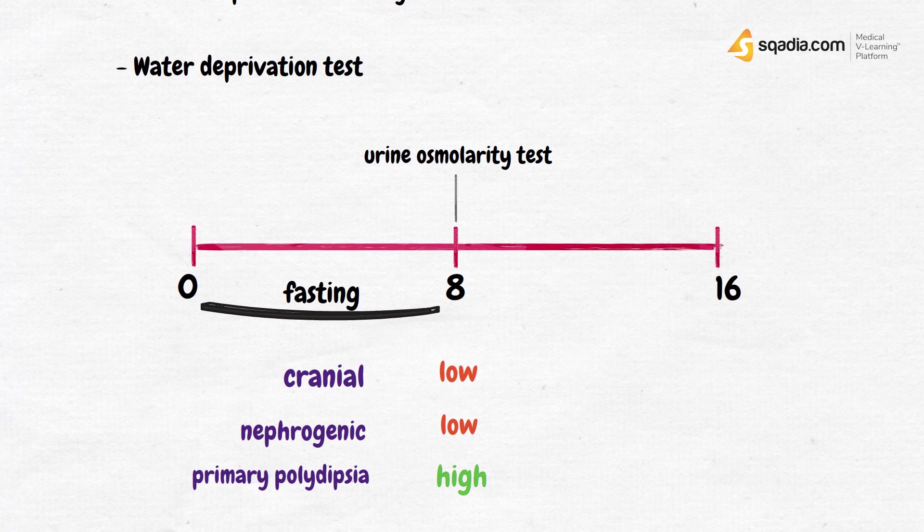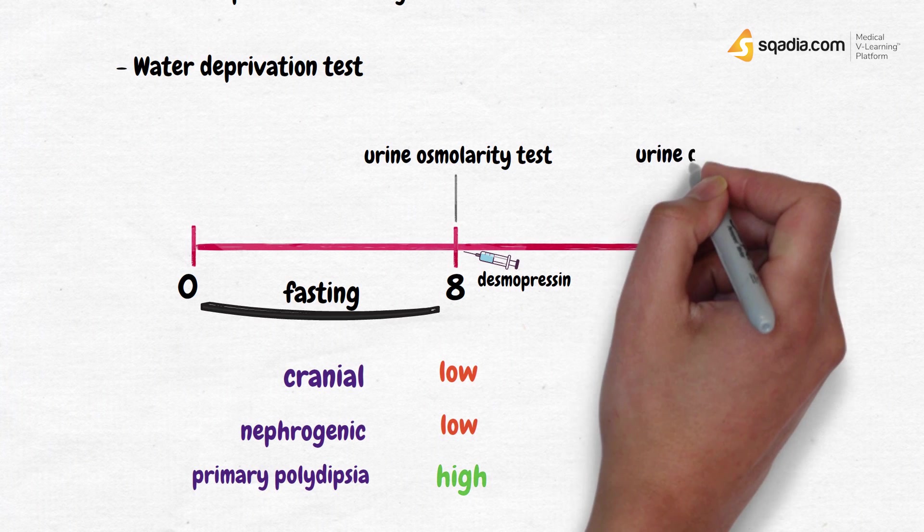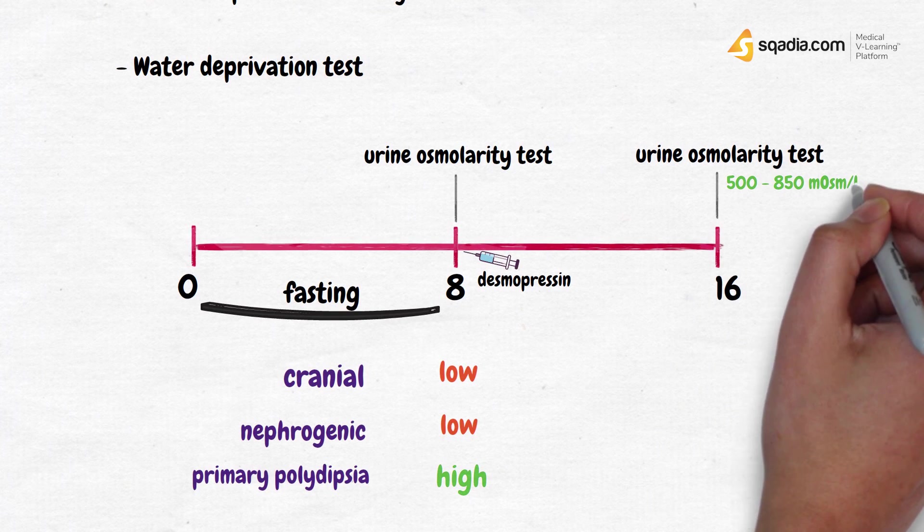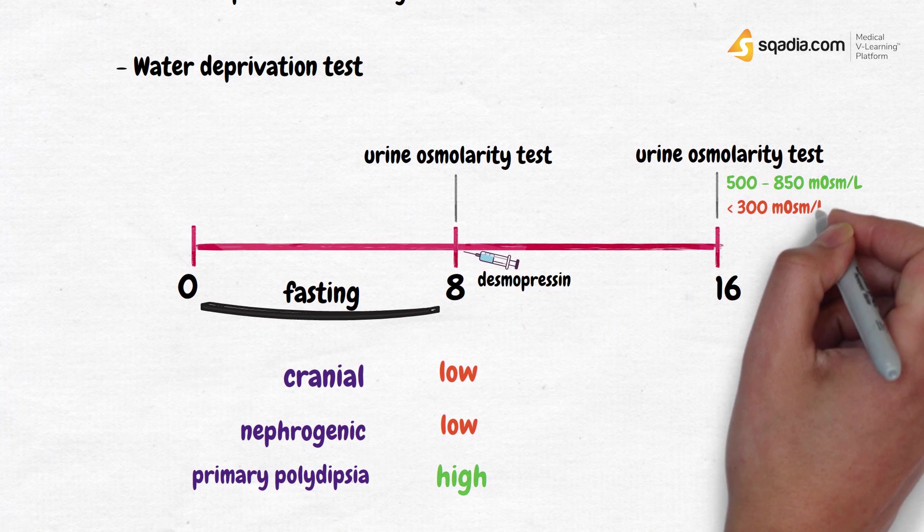Right after taking the sample for urine osmolality test, we also inject desmopressin, an ADH analog. After a further 8 hours, we perform another urine osmolality test. This time around, the body did have enough ADH thanks to the desmopressin we injected.